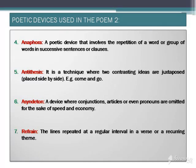The next device is antithesis. Antithesis means when two opposite or contrasting words are juxtaposed or put together. Many examples of antithesis are used in the poem. For example, in the third line of the third stanza: 'Men may come and men may go.' Here, 'come' and 'go' are two opposite words placed together, making it an example of antithesis.